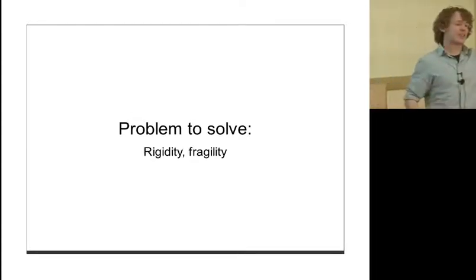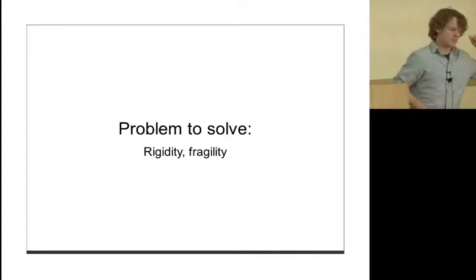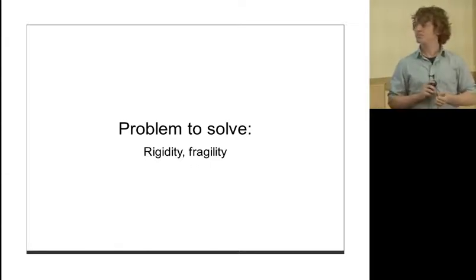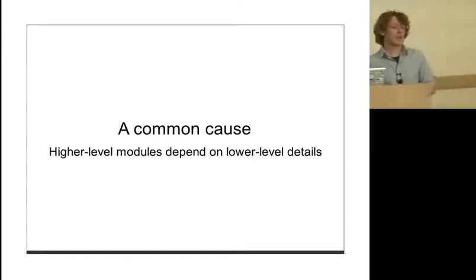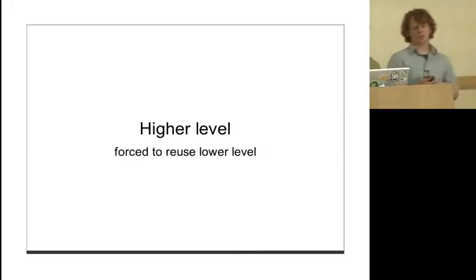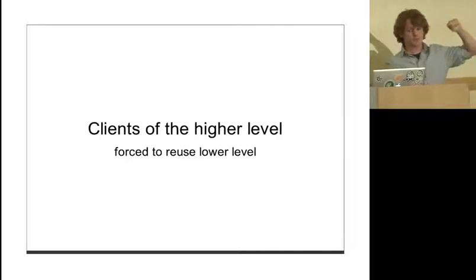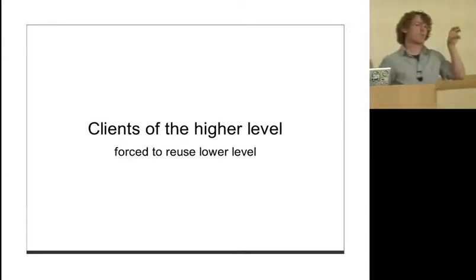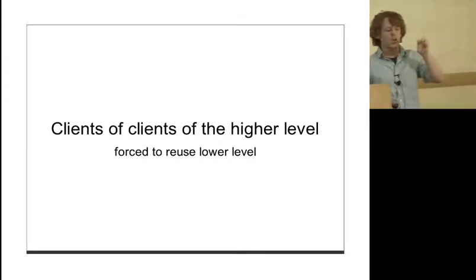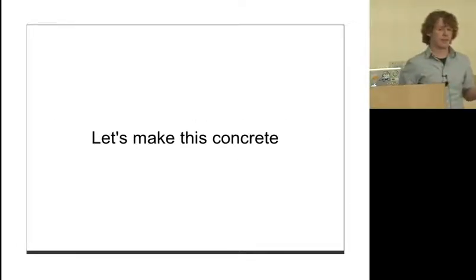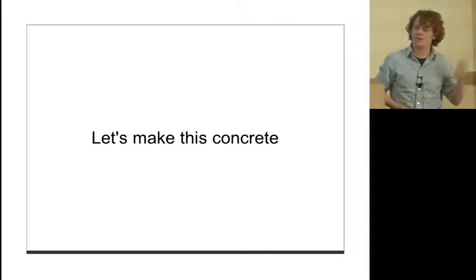I've seen this problem all over the place in all kinds of different paradigms. You've got rigidity, you've got fragility - things are difficult to change because they cause you to make changes all over your system. One cause of this that dependency inversion is specifically designed to mitigate is when you have higher-level modules depending on lower-level details. Higher-level modules are forced to reuse the lower level, and that means clients to the higher level also have to reuse the lower level.